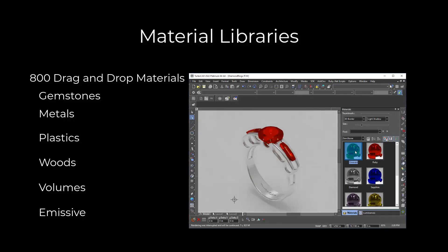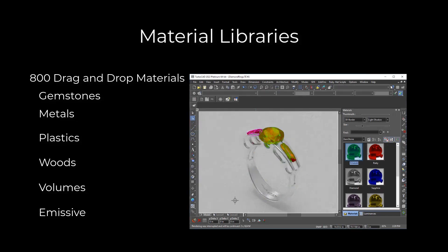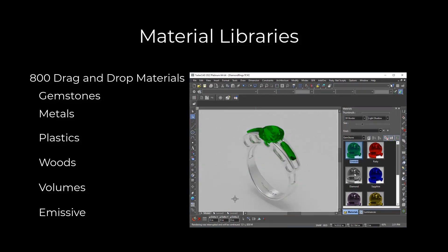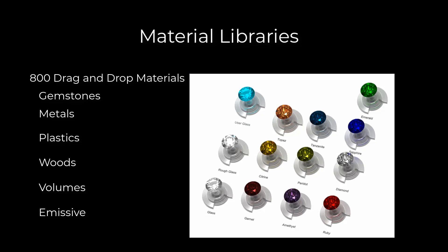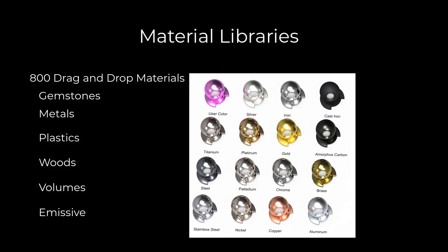Supporting the new rendering engine are over 800 new materials. Simply drag and drop your material over your object to quickly explore the results of different materials on your design. Choose from 26 categories of plastic, glass, wood, brick, car paint, and leather. We also support advanced emissive and volume-based materials for modeling fog or smoke. And be sure to check out our gemstone and metal-based libraries.